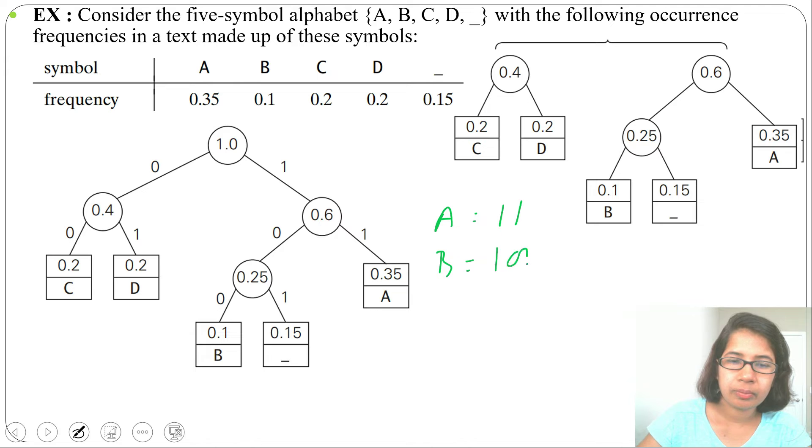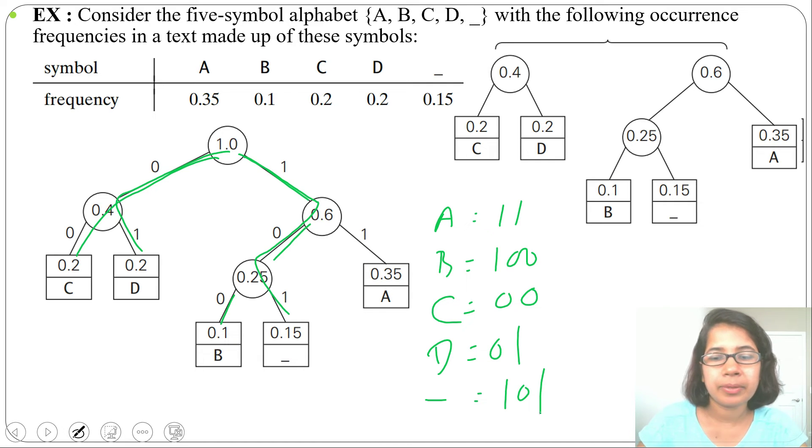Here, A code equals 1, B code equals 100, C code equals 00, D code equals 01, and underscore code equals 101. So these are the prefix codes for A, B, C, D, and underscore.